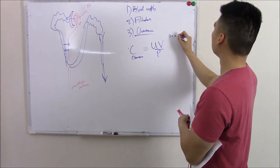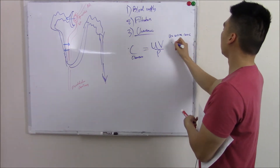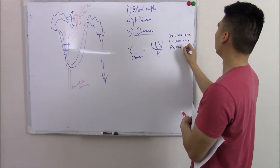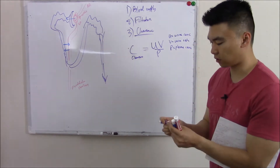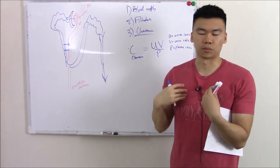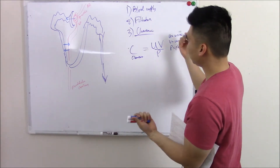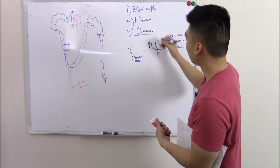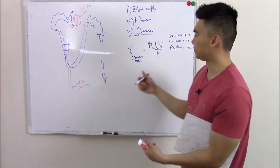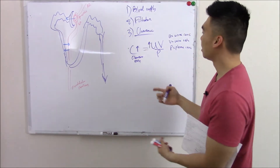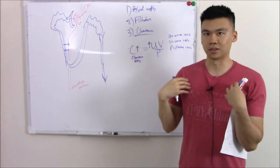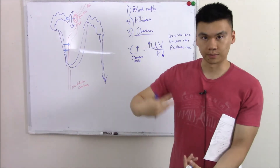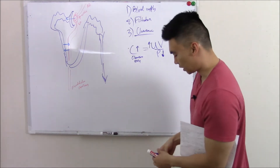U equals urine concentration, V equals urine flow rate — how much you're peeing — and P equals blood plasma concentration. For ammonia, that's a waste product, so urine concentration would be high, and mathematically that means clearance is high. Plasma concentration of ammonia would be low — it's a waste product — and mathematically that also means clearance is high.